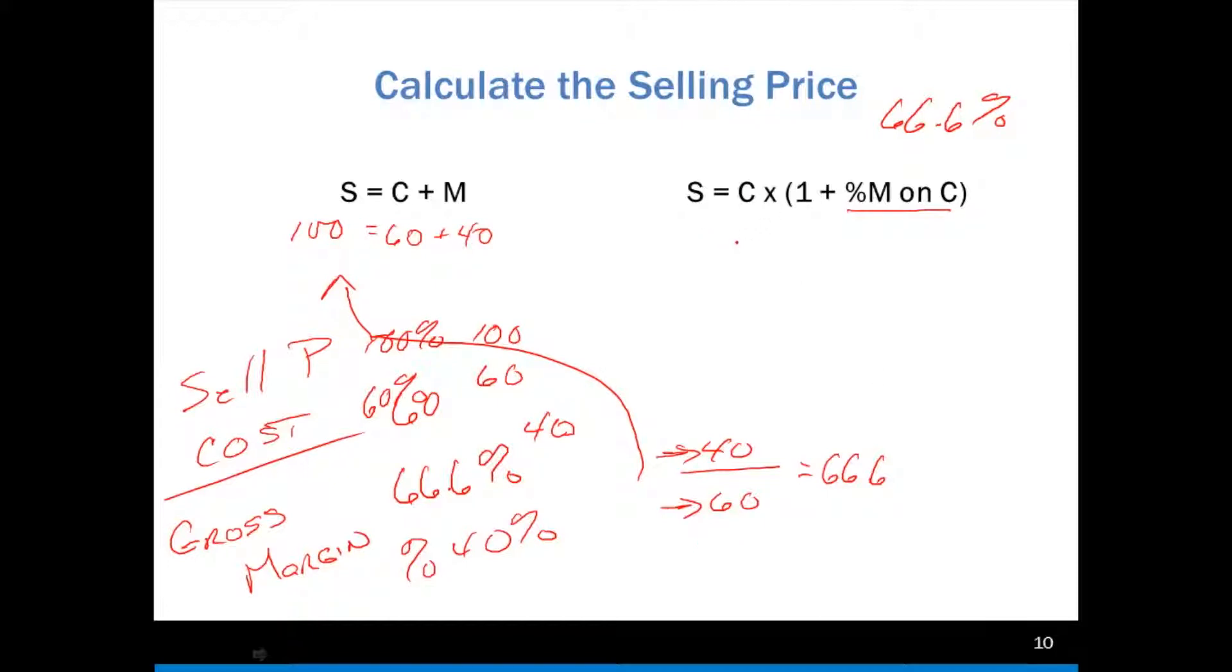In this case here, my cost is $60. And I'm going to multiply it times 1 plus my percent markup on cost of 66.6%. So that's 60 times 1.666. 66.6%, if I divide by 100, that'll give me 0.666. So 60 times 1.666, if I punch it up on a calculator, times 1.666 is equal to, my selling price is equal to, in this case here, was 99.96 or $100.